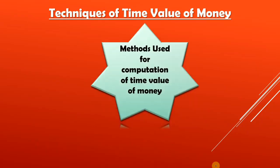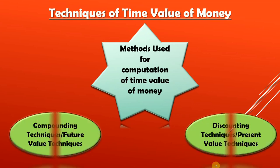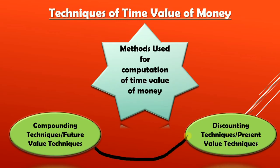There are basically two methods for computation of time value of money. The first is compounding techniques, also called future value techniques. The second is discounting techniques, also called present value techniques. These are the two methods through which we can compute the time value of money.